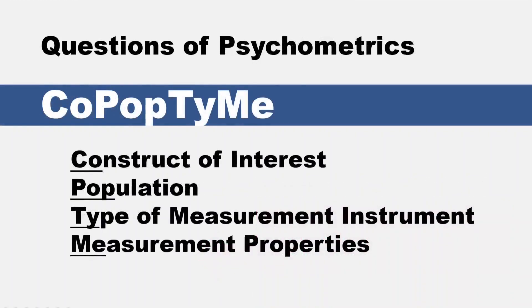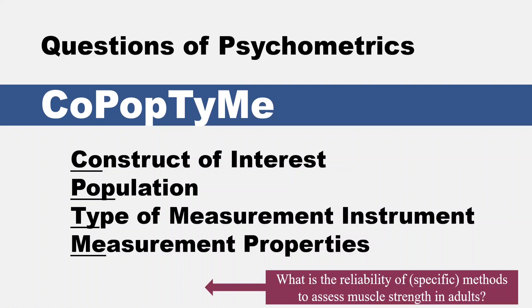The next framework is for questions of psychometrics. They didn't give this acronym in the article — I made it up. I'll call it COPOP: construct of interest, population, type of measurement instrument, and measurement properties. A sample topic: 'What is the reliability of specific named methods to assess muscle strength in adults?'